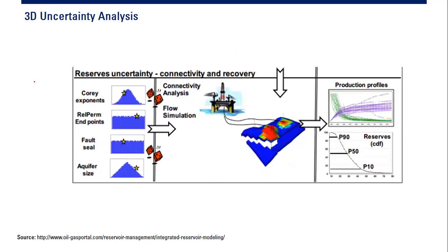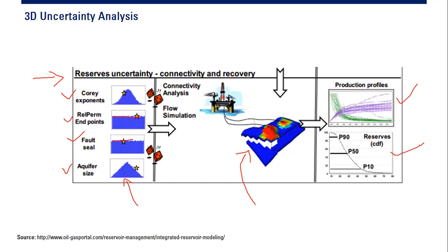This will influence and give reserve uncertainty including connectivity and recovery. So there will be uncertainty in Corey exponent, relative permeability endpoint, fault sealing, and aquifer size. The distributions are: Corey function with normal distribution, relative permeability endpoint as constant value, fault sealing as constant value, and aquifer size with triangle distribution. This gives us different connectivity, different flow simulation models, different production profiles, and different reserves.